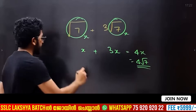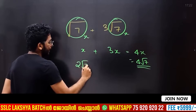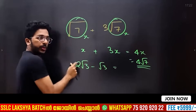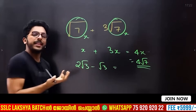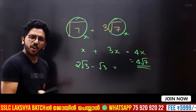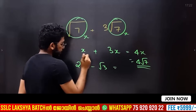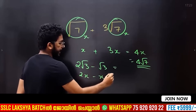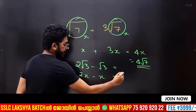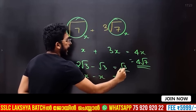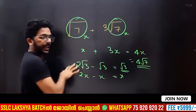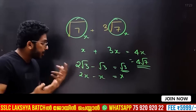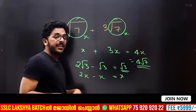Subtraction: two root three minus root three. You have two root three, you subtract one root three. Two minus one — that's one root three. Two root three minus one root three equals one root three. Addition and subtraction — it's very simple.